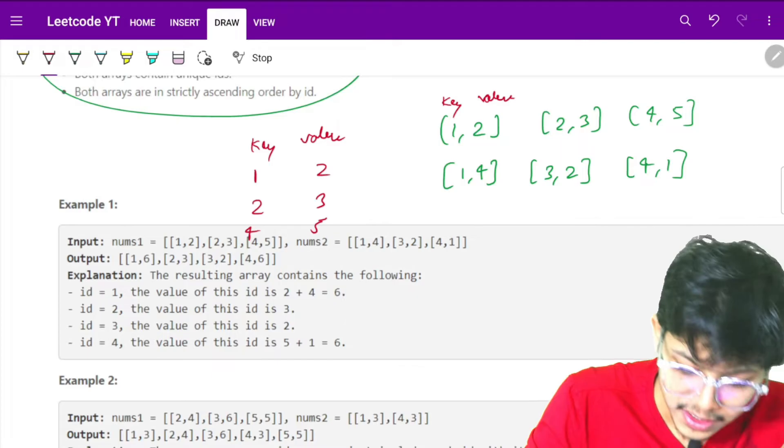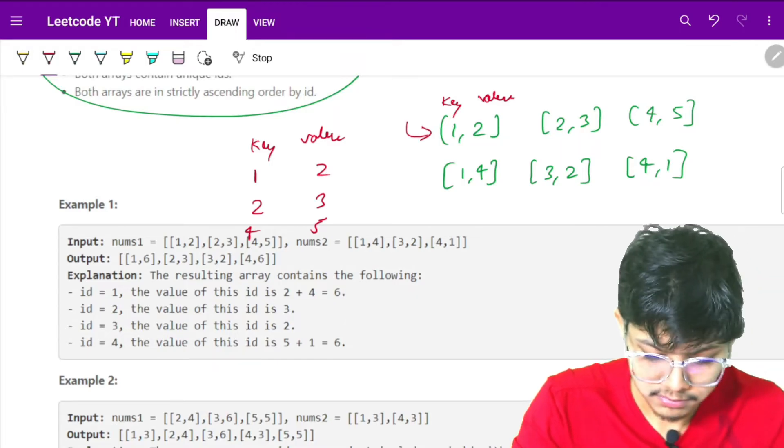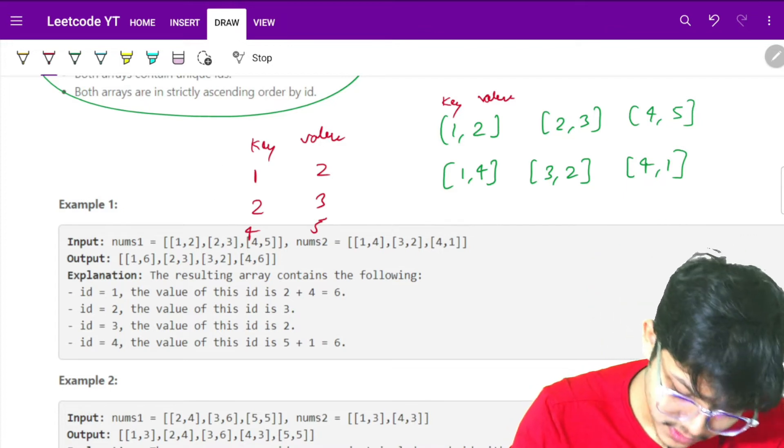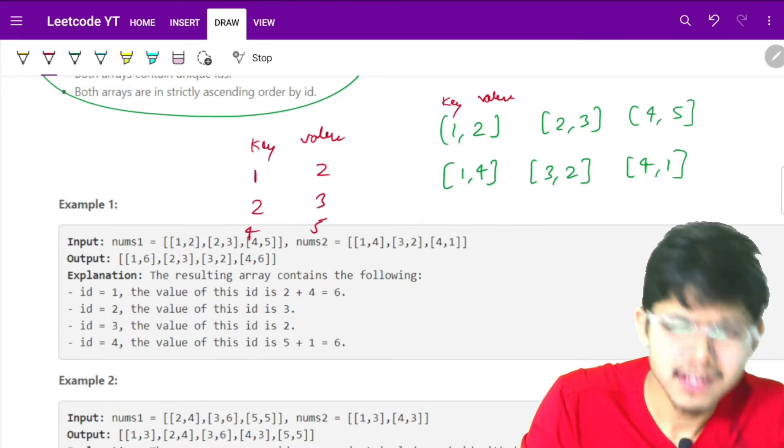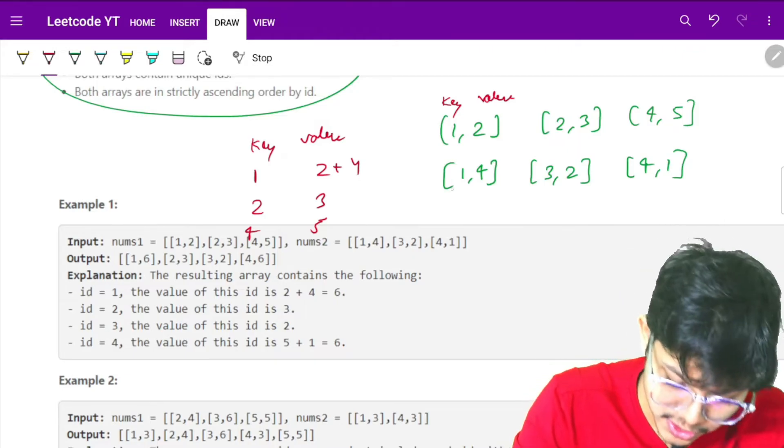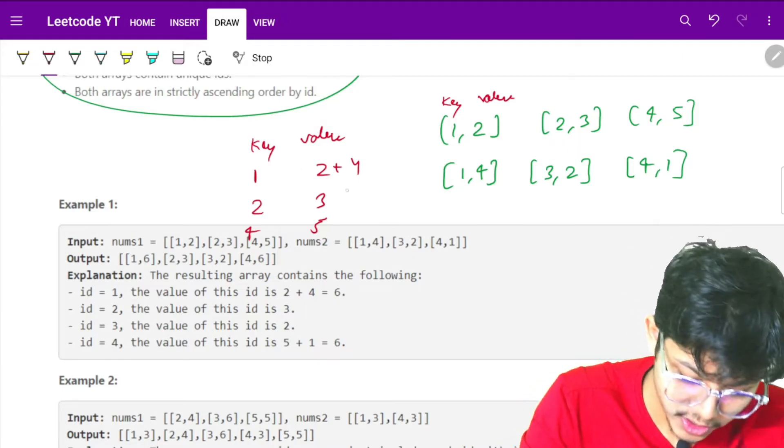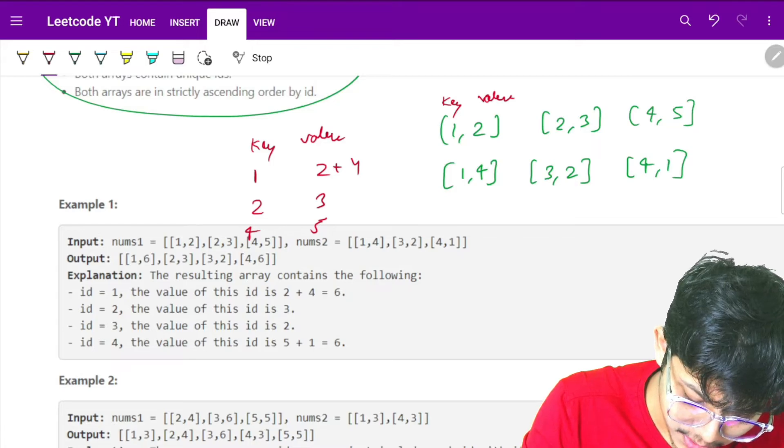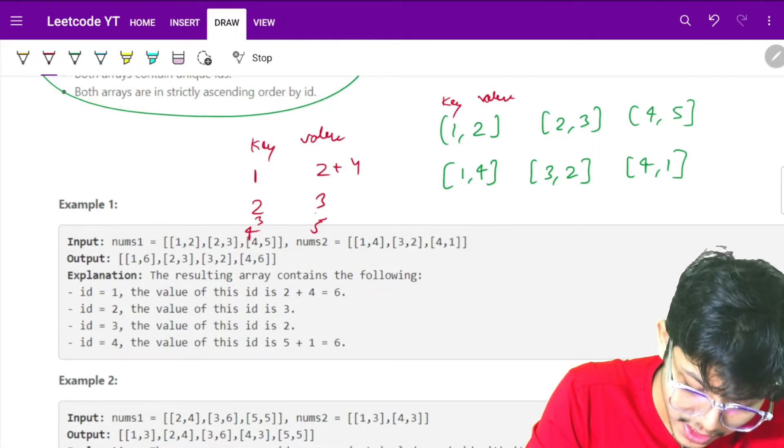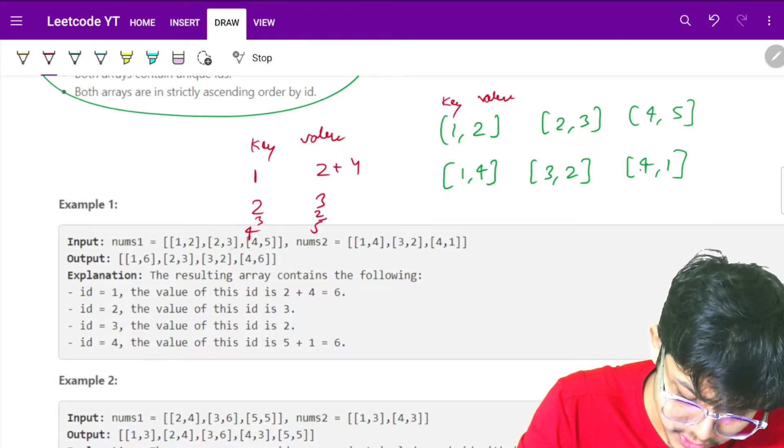If the key is 1, the value is 2. If it is 2, value is 3. If it is 4, value is 5. Then I iterate on this array and add the values back into the map. If 1 is already in the map, I just add to it.